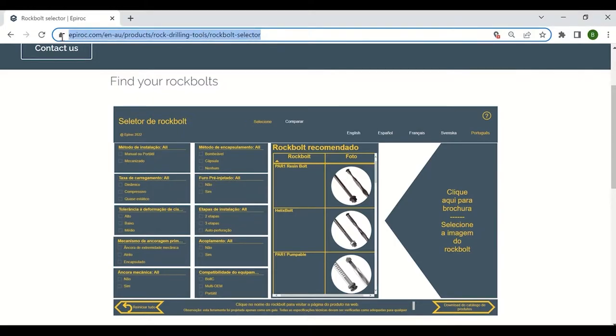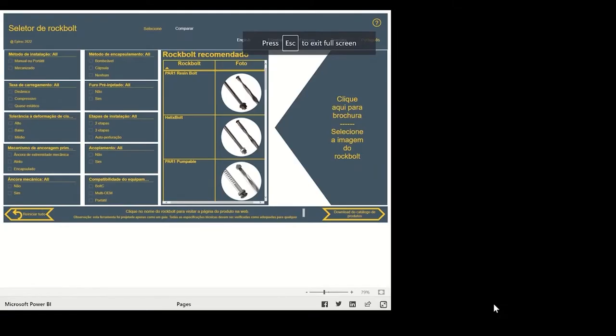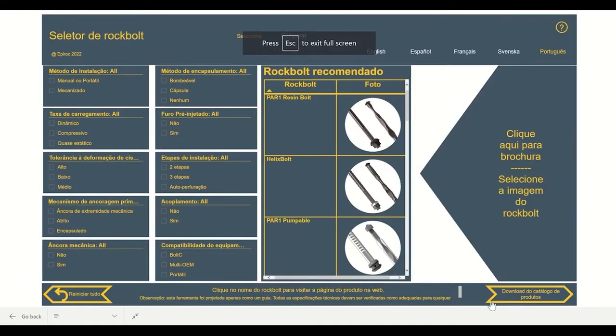Once you've loaded up the RockBolt Selector from the Epiroc Ground Support page, the first thing I'd like to do is just go to the bottom here and expand it to full screen. It's just a bit more user-friendly.